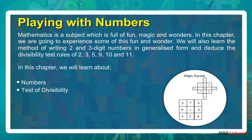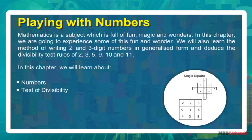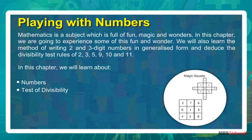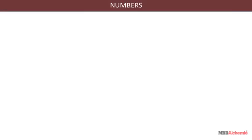Mathematics is a subject which is full of fun, magic and wonders. In this chapter we are going to experience some of this fun and wonder. We will also learn the method of writing two and three digit numbers in generalized form and deduce the divisibility test rules of 2, 3, 5, 9, 10 and 11. We will learn about numbers, test of divisibility, and numbers in general form.